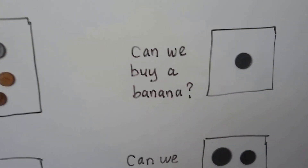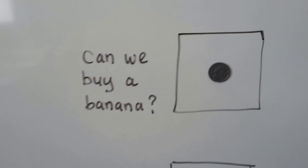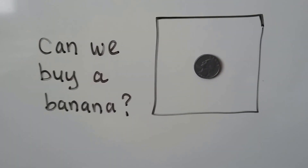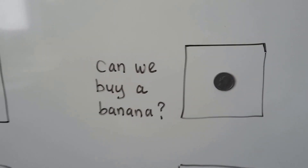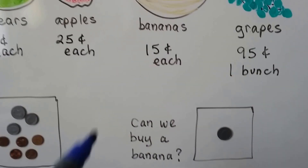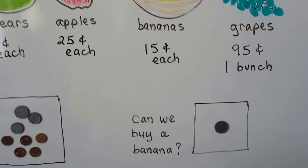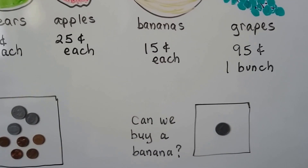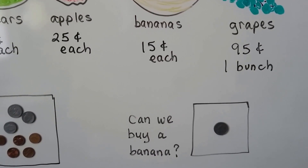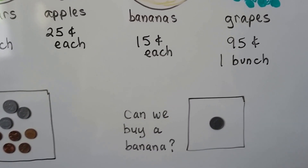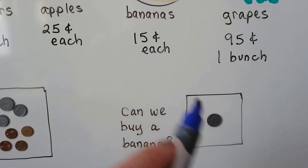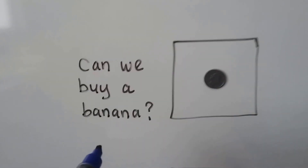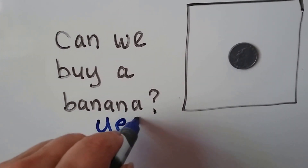How about the money in this box — can we buy a banana? We have a quarter, and a quarter is 25 cents. The bananas are 15 cents each, so do we have enough? Yes — in fact that's more money. They would have to give us some money back. We have more than enough money to buy a banana.